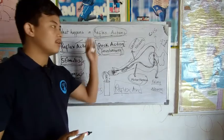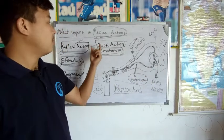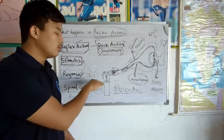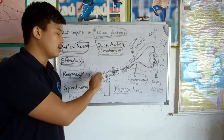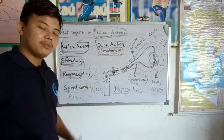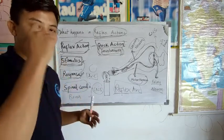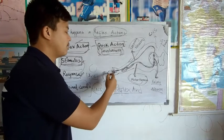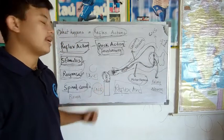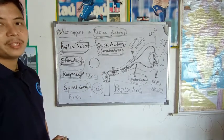You may wonder why the signal goes to the spinal cord and not the brain for processing. This is because reflex action is not a complex thinking process — it is a quick action. If the signal went to the brain and you had to think about removing your hand, that would take a long time and your hand would get burned. So the processing happens in the spinal cord for speed.